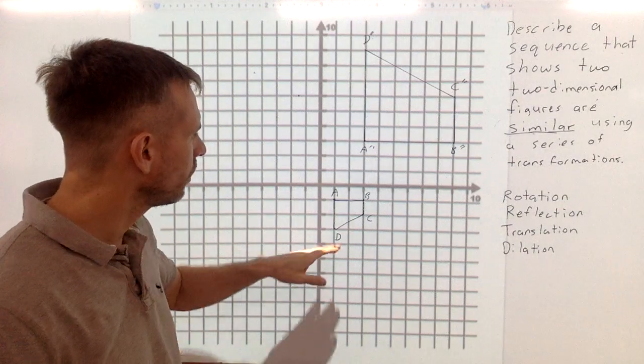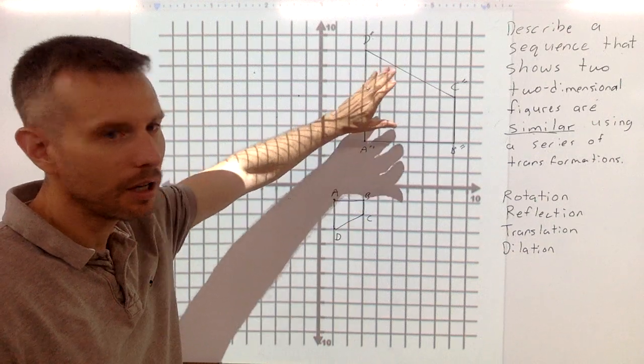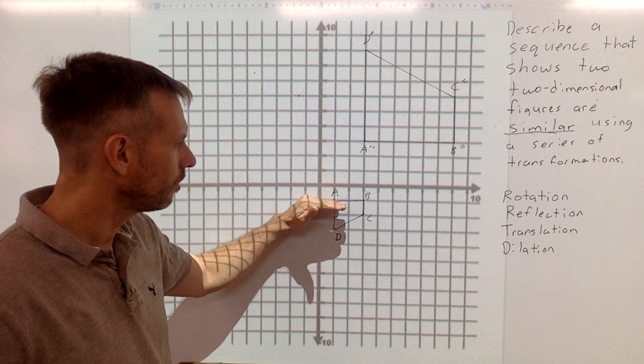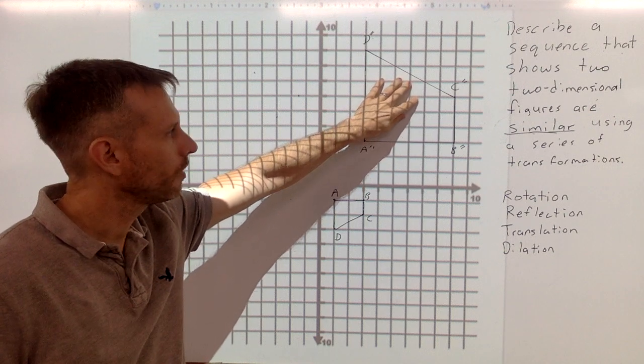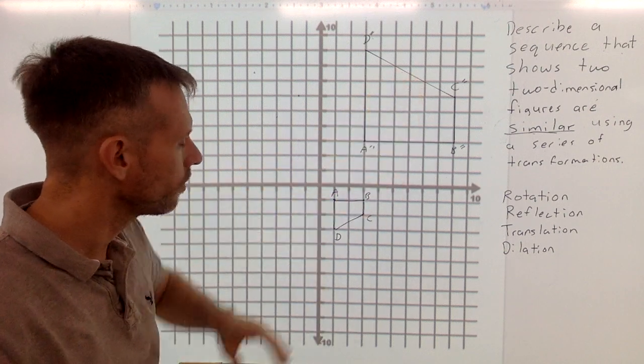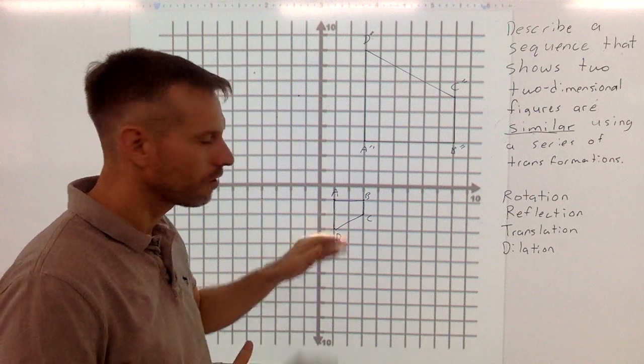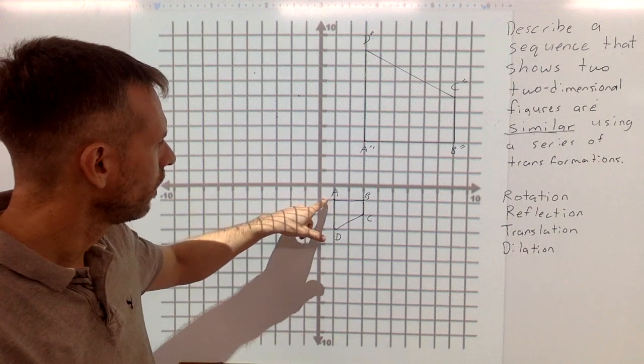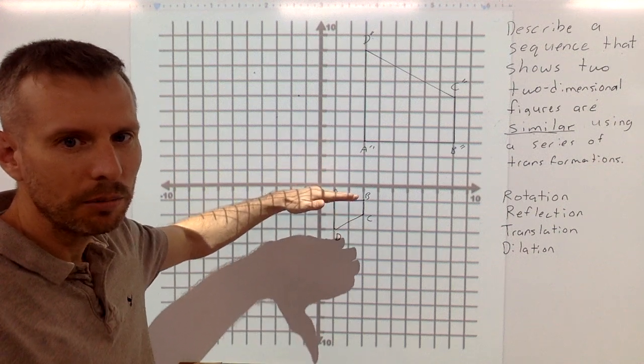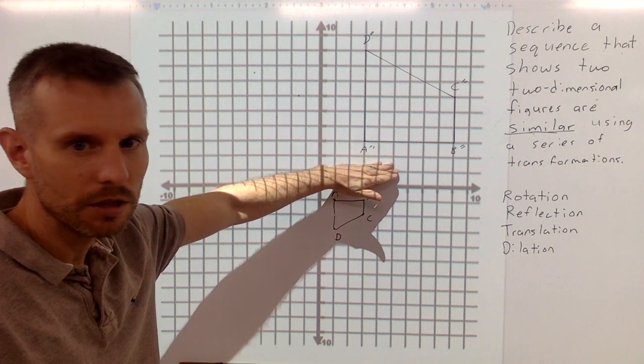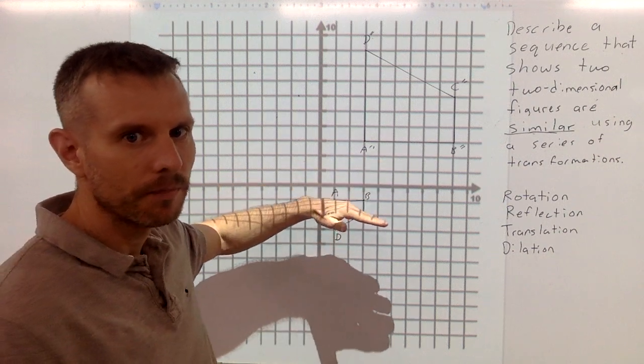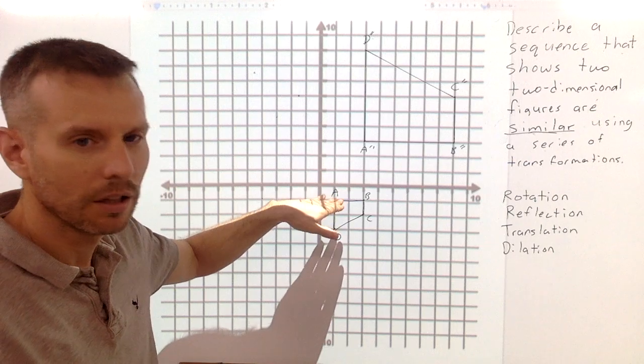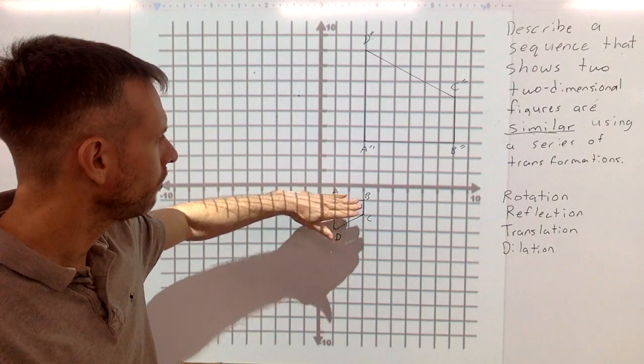So let's get started. I'm going to look at the figures A, B, C, D, and A prime, B prime, C prime, D prime, and I'm going to notice a couple of things. First of all, the new image is larger than the original image. So there's probably a dilation greater than one going on here. Also I'm going to notice that on here A and B are on the top of the image and here A and B are on the bottom of the image, and they're still horizontal. So that kind of tells me that there's probably a reflection going on here.